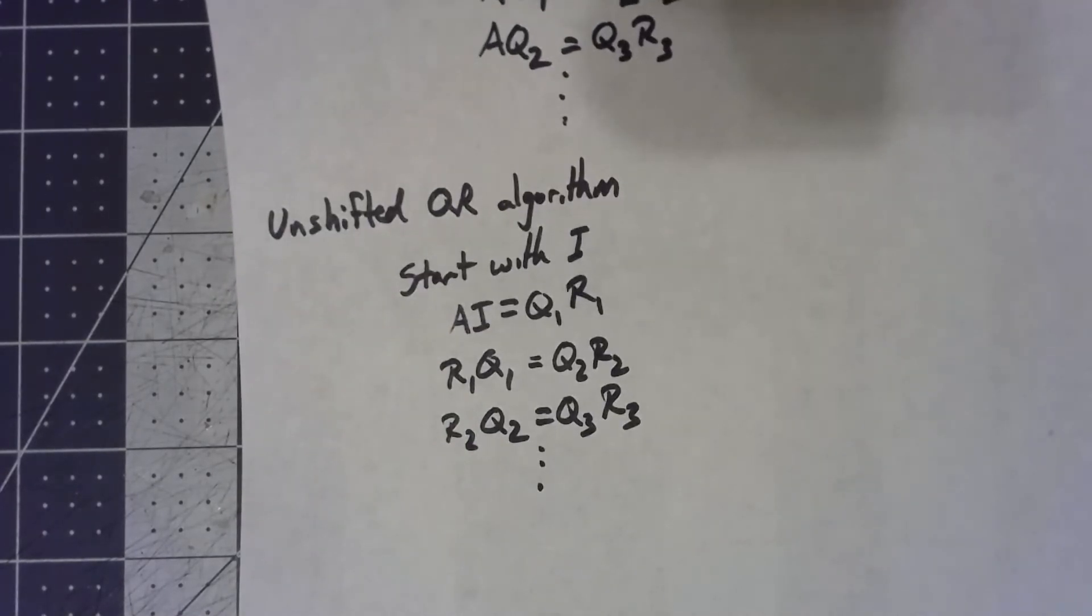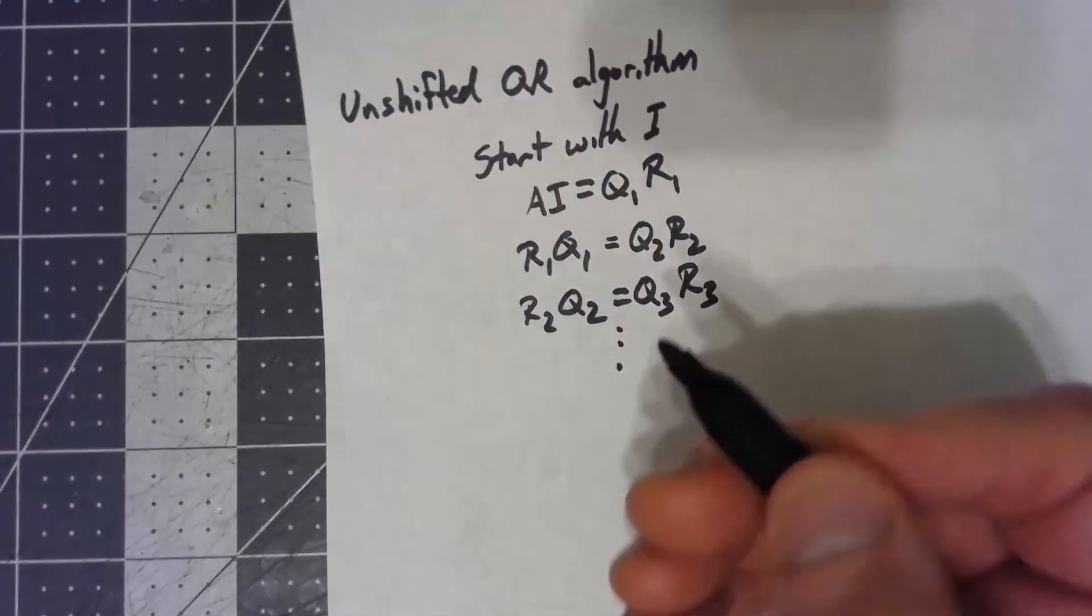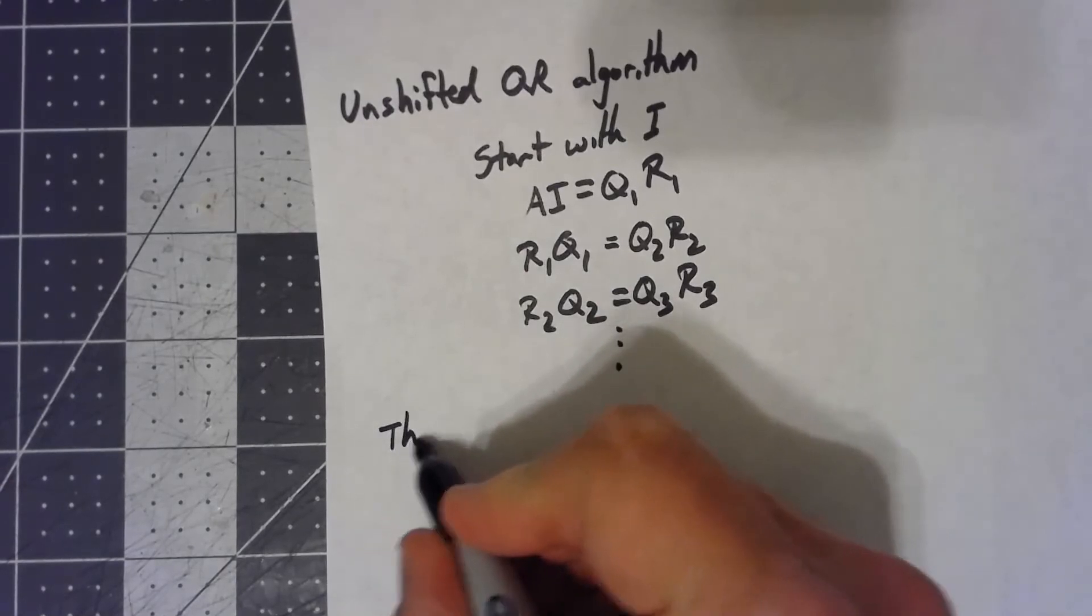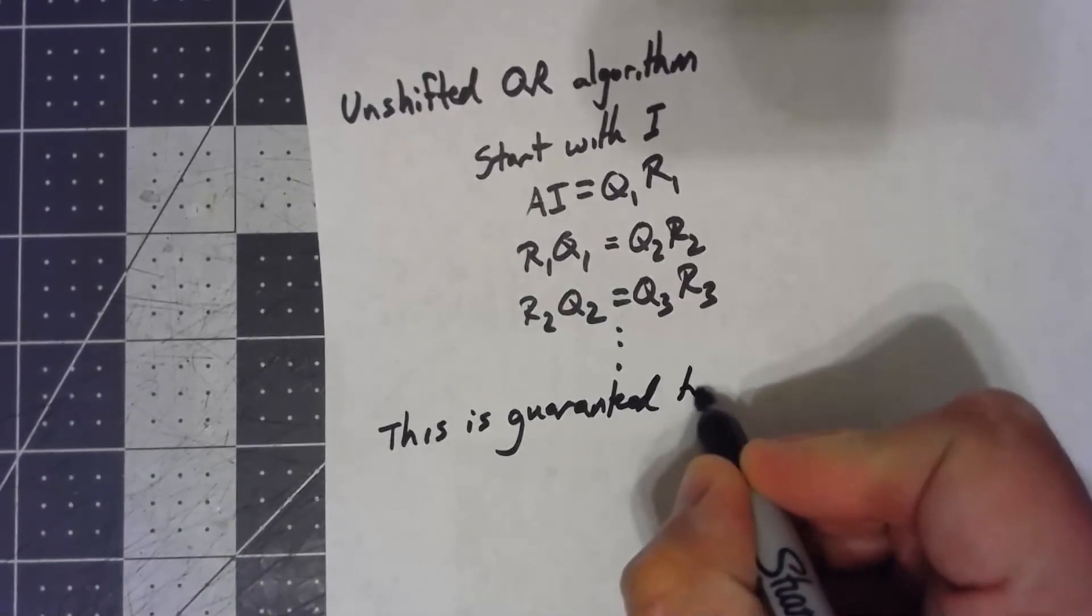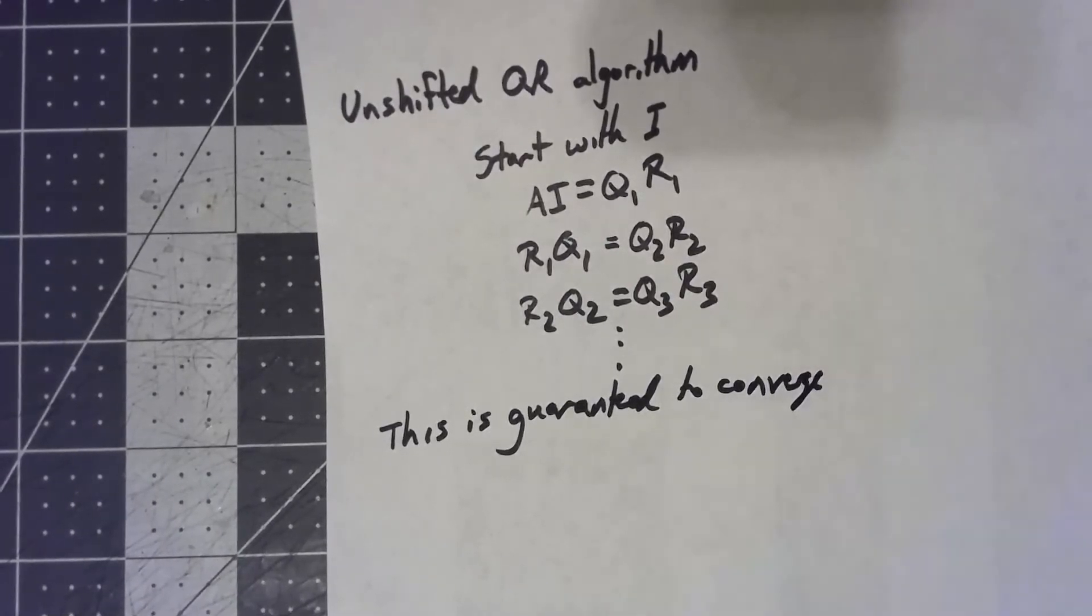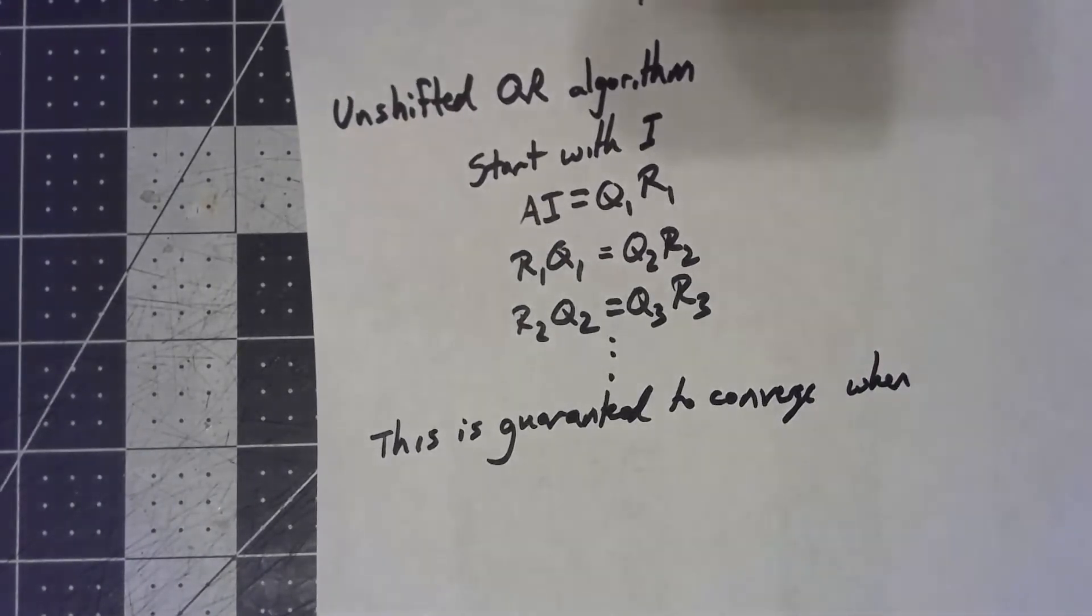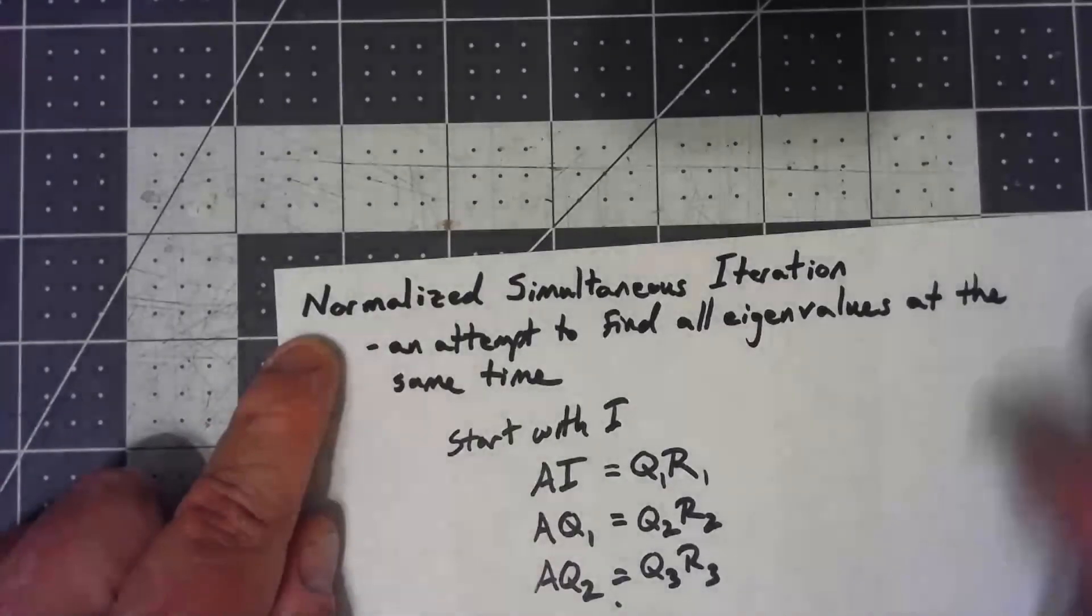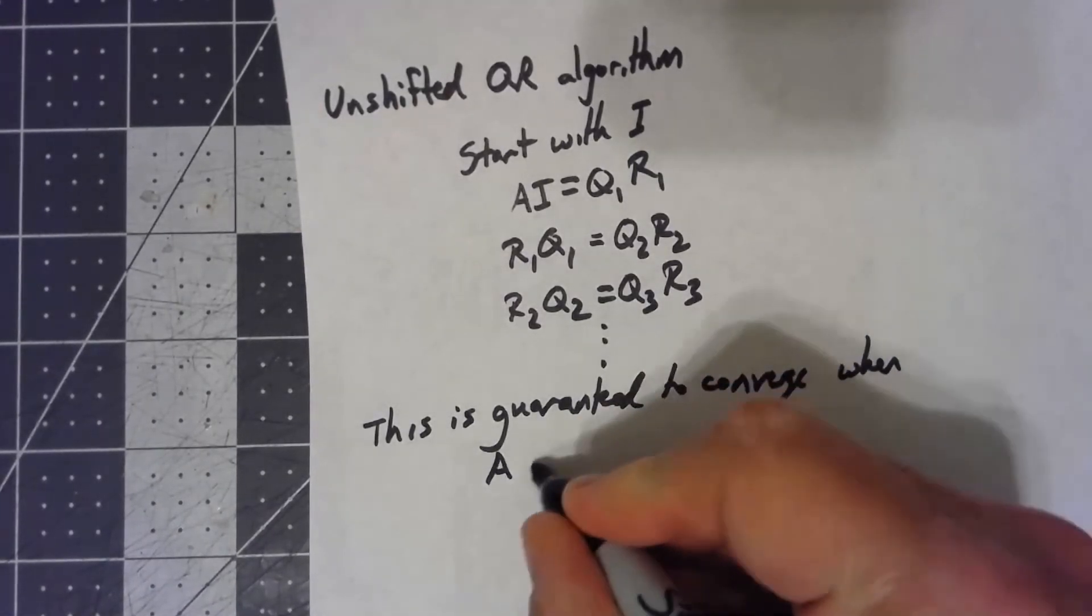So I keep saying that under the right conditions, how can we guarantee? Well, there are actually pretty specific conditions here. This whole process, either one, same conditions for both, whether we use the normalized simultaneous iteration or the unshifted QR algorithm, are guaranteed to converge when, now the big one is that A has to be symmetric.